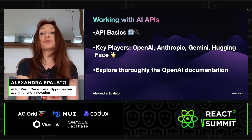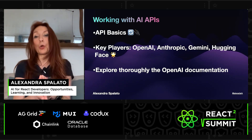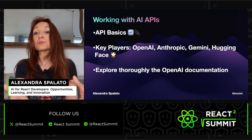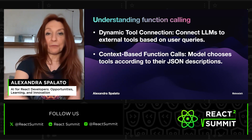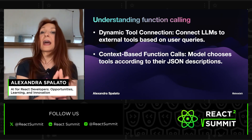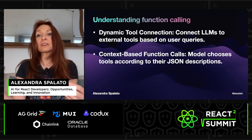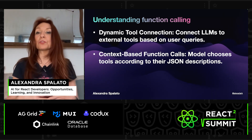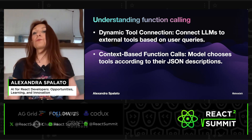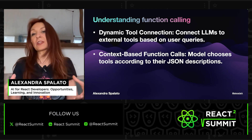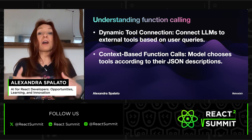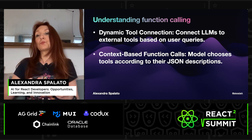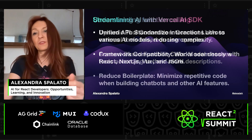I would also recommend thoroughly exploring the OpenAI documentation and understanding how the Assistants API works, as well as function calling. Function calling allows you to connect large language models with external tools. Depending on the user query, the model will call one tool or another. For example, if we have two tools — one for checking weather and one to send an email — if you ask how you should dress in Madrid today, it will invoke the check weather tool. And if you ask to send an email, it will use the other one.